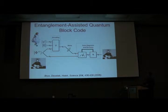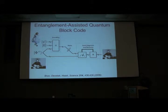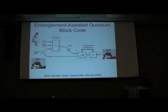Bob receives all the qubits, combines them, performs measurements to diagnose the errors, and performs recovery operations based on those syndromes. The crucial result from this work is that you can import an arbitrary classical block code for use in quantum error correction. With stabilizer codes using the CSS construction, you can only import dual-containing codes. Entanglement assistance allows you to import the full power of classical coding theory — this is what we're looking for with the convolutional theory.